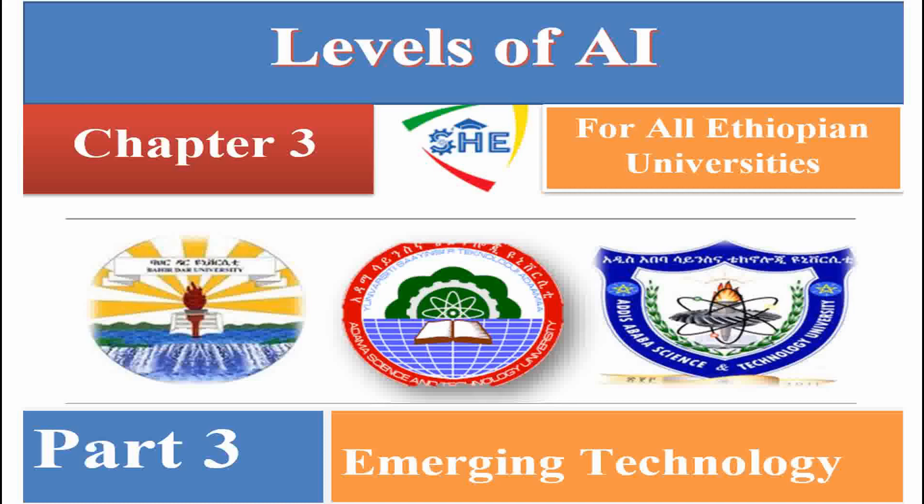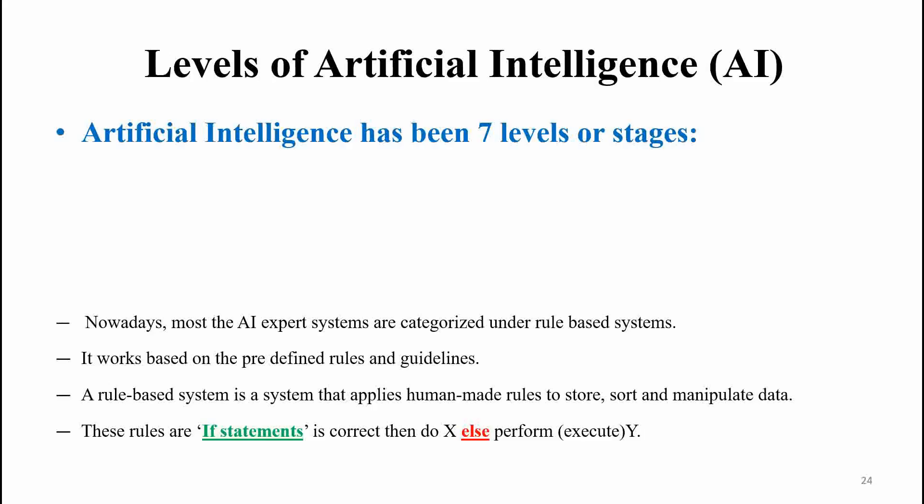Today I will discuss about the levels of AI, or artificial intelligence. Artificial intelligence is most needed for creating intelligent machines. Now, intelligent machines create expert systems. So artificial intelligence has been seven levels or stages.